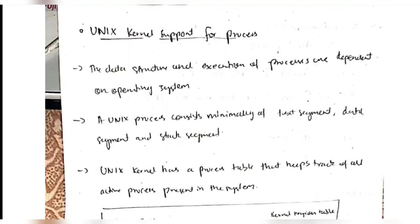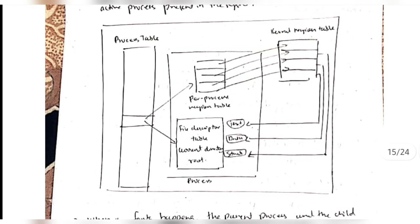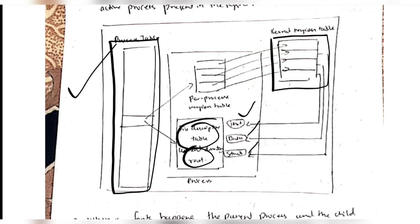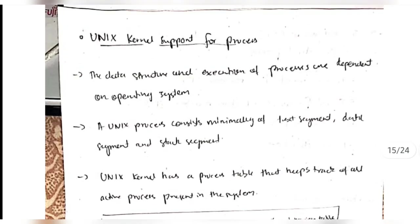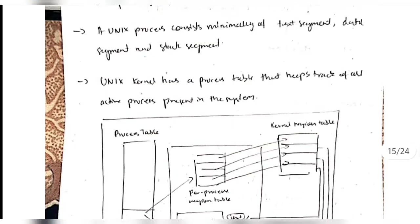The kernel is the main part of the system and has an organized way of handling processes. It has the kernel table as well as the process table - by using these it handles processes in an efficient manner. There are different categories for the text, data, stack, and file descriptor table. The Unix kernel supports a great way of organizing things, and that is about kernel support for the process.